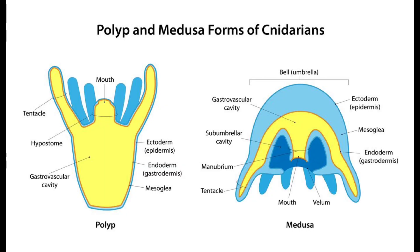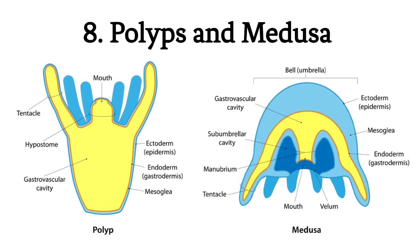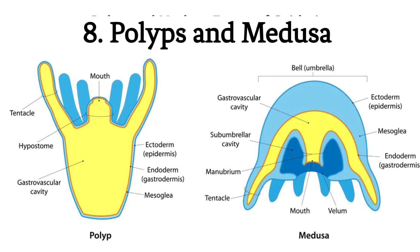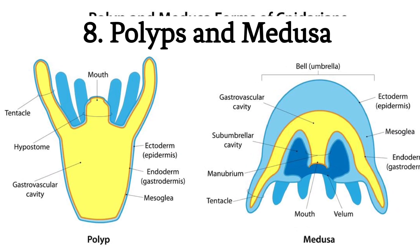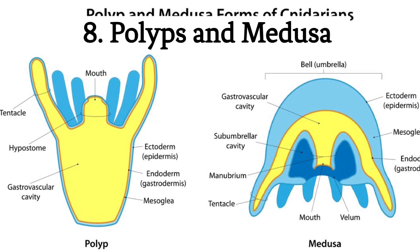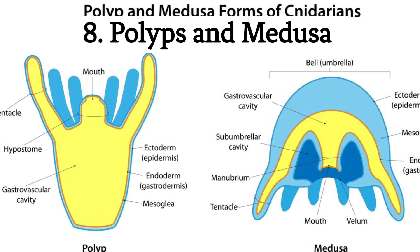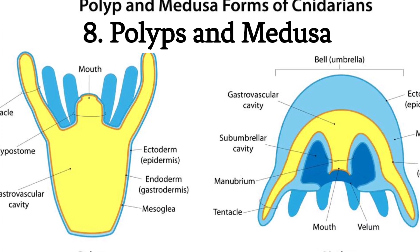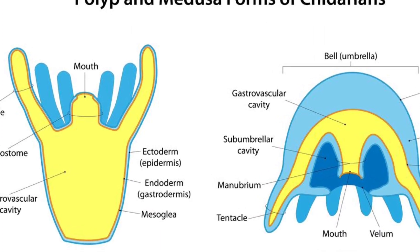8. Polyp and Medusa Forms: Many Cnidarians exhibit a life cycle that alternates between a polyp form (sessile, tubular) and a medusa form (free-swimming, umbrella-shaped). For example, hydroids have a polyp-dominated life stage, while jellyfish are medusae.